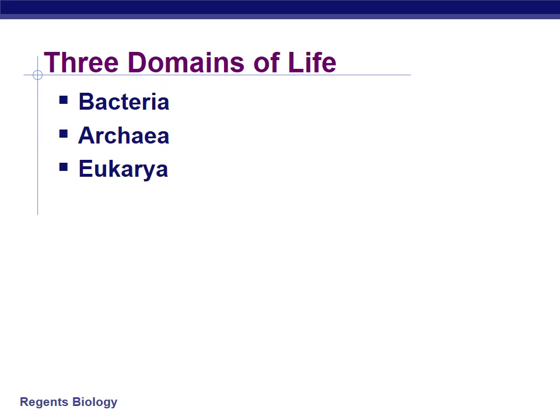Currently there are three domains of life: Bacteria, Archaea, and Eucarae. The first two are prokaryotic, meaning they do not have a nucleus, while Eucarae stands for eukaryotes. We'll go through some of the characteristics of each.